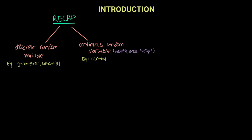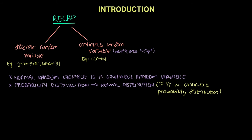The normal distribution is a very important continuous probability distribution, which will help us map real-time scenarios and calculate probabilities accordingly. The normal random variable is a continuous random variable, and its probability distribution is called the normal distribution, which is also a continuous probability distribution.